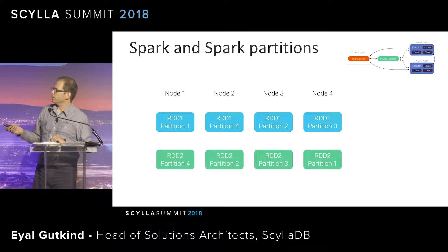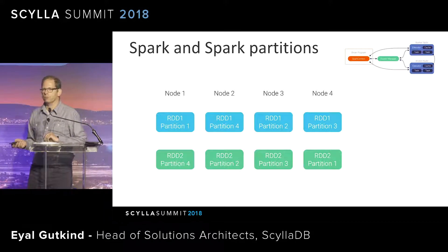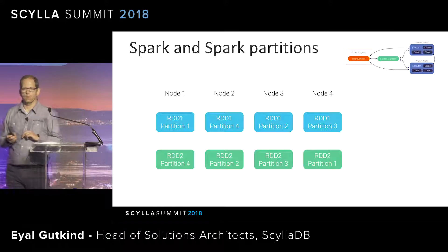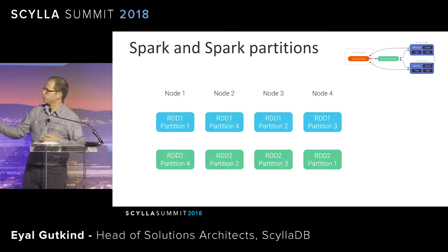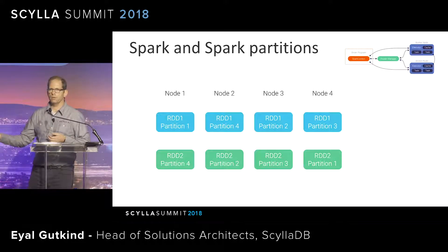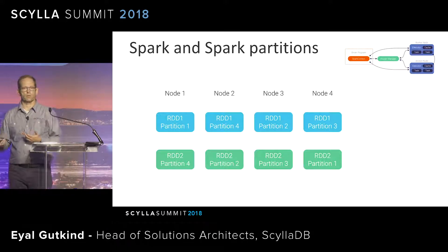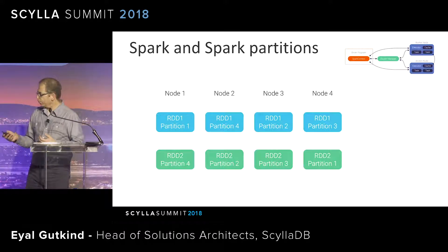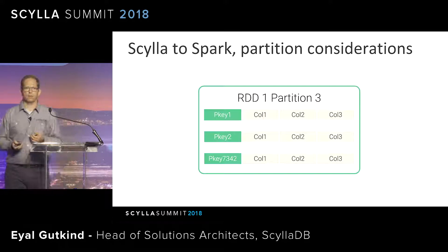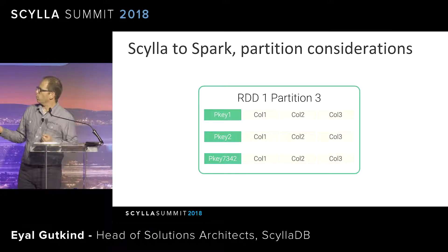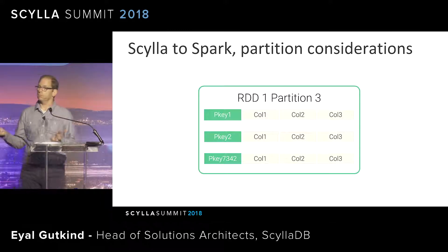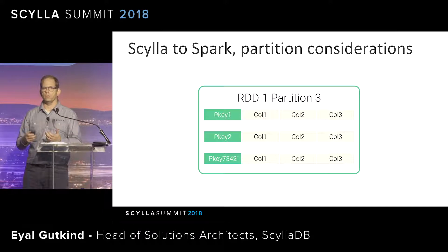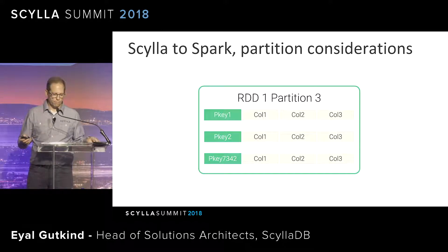One thing to concentrate on here is that when Spark was written, it was written for a Hadoop file system, where the actual execution unit sits on top of the data. It means it will store the information that resides in that specific node and read from it — the idea being to minimize network traffic and make it as efficient as possible. But with Scylla, partition key one, partition key two, and partition key N will sit on different nodes in the cluster. So we kind of lost that connectivity between Scylla data nodes and Spark nodes — that data locality is no longer there.